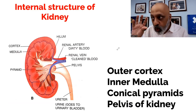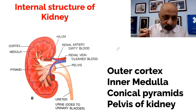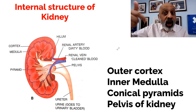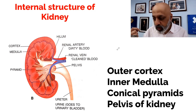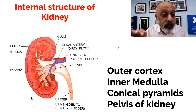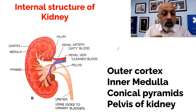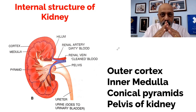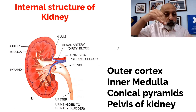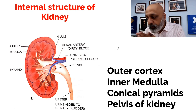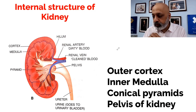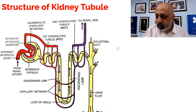Now let's look at the internal structure of the kidney. The cortex is the outer layer of the kidney. Then you have the inner medulla, which is the inner layer. The medulla is composed of a number of pyramids — conical in shape — and the apex of each pyramid projects into the pelvis of the kidney, which is the middle portion. Then you have a number of uriniferous tubules or nephrons, which we will examine in the kidney tubule diagram.